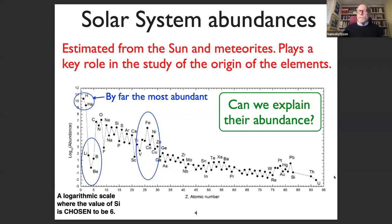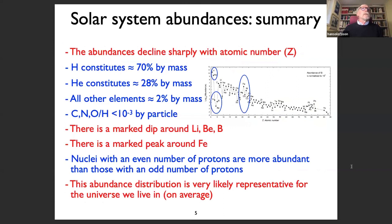One thing noticed directly is that abundances decline sharply with atomic number, so the very heavy elements are much less abundant than hydrogen. Hydrogen constitutes about 70% by mass in the universe, and helium about 28% by mass. All other elements together constitute less than 2% by mass. If you look at it by particle, common elements like carbon, nitrogen, oxygen, etc. are less than 1 in 1000 by particle compared to hydrogen.